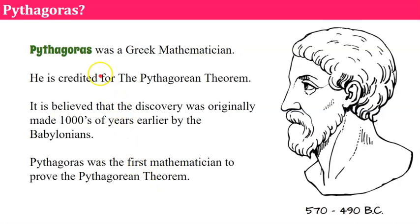First let's talk about Pythagoras. Pythagoras was a Greek mathematician. He is credited for the Pythagorean Theorem. It is believed that the discovery was originally made thousands of years earlier than he is credited for it by the Babylonians.